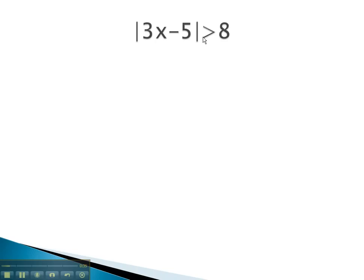In this first problem, we see the absolute value is greater than 8. This reminds us to set up an or. We will simply grab the 3x minus 5, and we set it up as less than the negative value, or the 3x minus 5 is greater than the positive value.